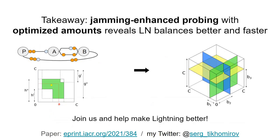So in summary, we have shown that jamming helps the attacker increase the information gain, get more information about channel balances in the Lightning network, and the optimized amount selection allows the attacker to do that faster.